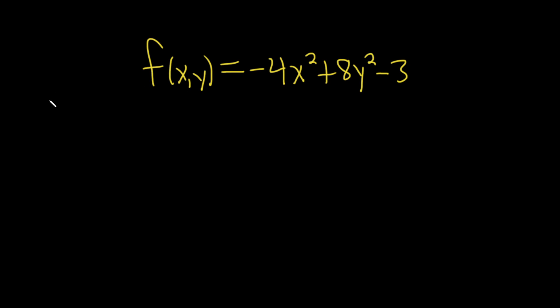So the first step in using the second derivative test is to take both first derivatives with respect to x and y in this case and set them equal to 0. So we want all the first order partials. So in this case we have fx and we set that equal to 0. So fx is the partial with respect to x.